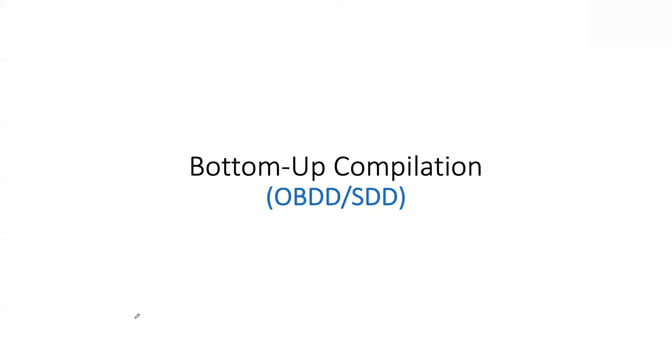Let's get started with the second part of today's lecture where we'll be talking about bottom-up compilation. We're discussing these circuit types and what they allow you to do, but the real fundamental computational question is compilation: I give you a boolean formula and say compile it into a circuit that satisfies composability or determinism, compile it into a DNNF, an OBDD, or an SDD. There are two types of compilers: top-down and bottom-up. We covered top-down, which are based on exhaustive DPLL while keeping a trace, and now we'll talk about bottom-up compilers.